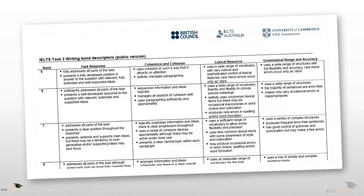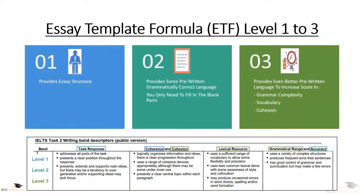Before explaining more about the three different template levels, let's go back to the IELTS writing task band descriptors. The criteria are so important because they are the things examiners are looking for in your writing. I've placed the writing criteria below the three template levels. Level 1 templates help with the task response and coherence criteria. Level 2 templates help with the grammatical accuracy criteria. Level 3 templates help with grammatical range — which is about complexity — vocabulary, lexical resources, and cohesion criteria.